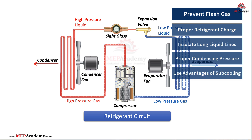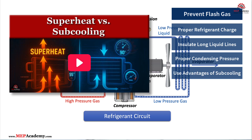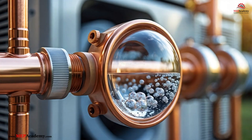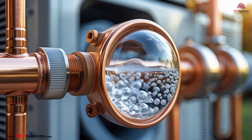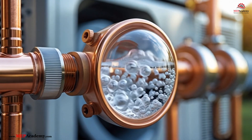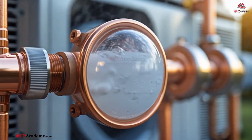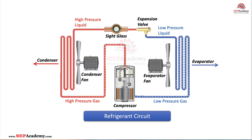See our other video on superheat and subcooling for a further explanation. Subcooling is key — it ensures the refrigerant stays a liquid until it reaches the expansion device. So to recap: flash gas is normal in the evaporator, but not in the liquid line. Understand it, control it, and your refrigeration system will thank you.